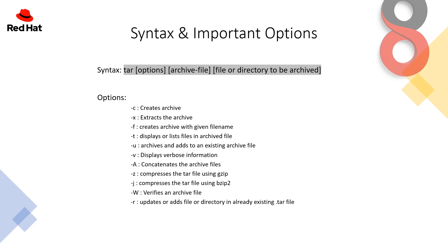Here are some important options for this command. -c is for creating an archive. -x is used for extracting the archive. -f creates an archive with a given file name. -t displays or lists files in an archive file. -u archives and adds to an existing archive file — like if you have an existing zip file and you want to add more files into it, you run the syntax using -u.